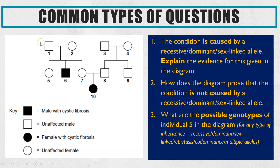Finally, you could be asked to give the genotypes of a particular individual in the pedigree diagram. They could give you any individual whose genotype you can work out. Or if there are multiple options of what it could be, based on the limited information you've been given, the question will say 'give the possible genotypes,' and in that case you have to give all of the possibilities that it could be.